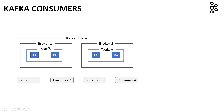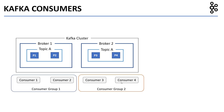Let's again look at this example of a Kafka cluster having two brokers, broker 1 and broker 2, and a topic, topic A, with four partitions P1, P2, P3, and P4. Again, we have four consumers each listening on topic A. But now, instead of each consumer having its own unique consumer group, we create consumer 1 and consumer 2 in consumer group 1, and consumer 3 and consumer 4 in consumer group 2. So there are two consumer groups, each having two consumers, and both consumer groups are listening on topic A, which has four partitions P1, P2, P3, and P4.